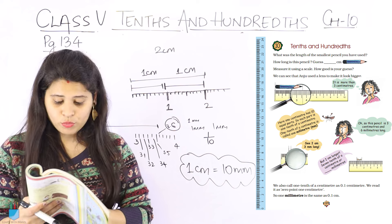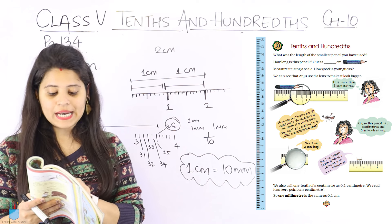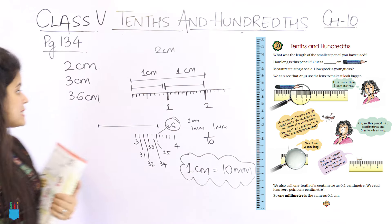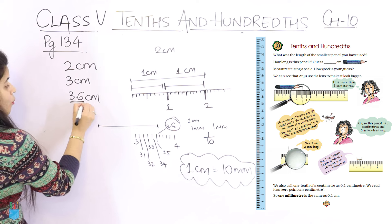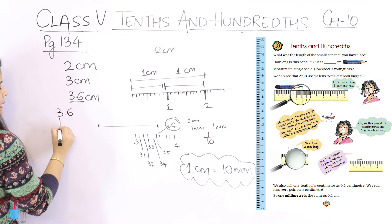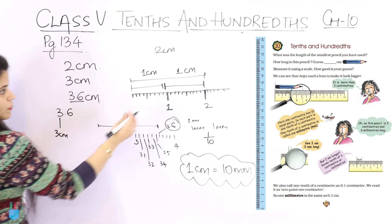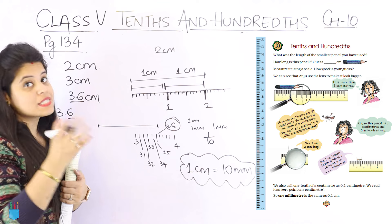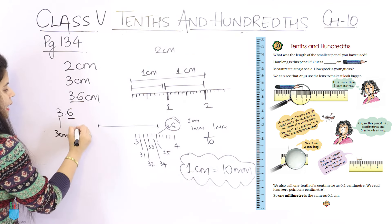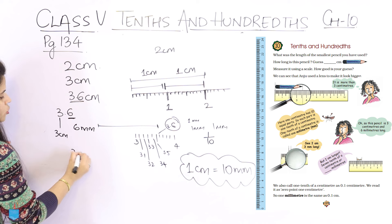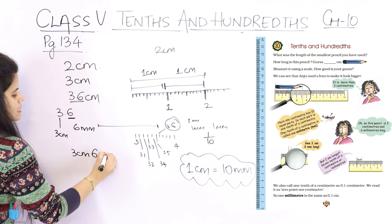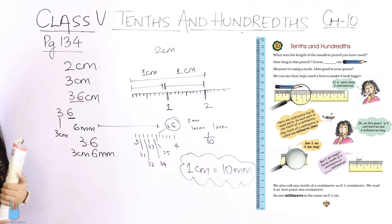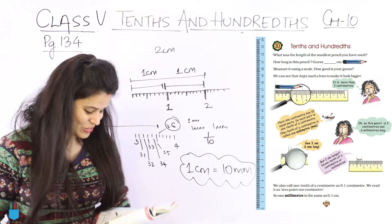This pencil is 3 centimeters and 6 millimeters long. So the pencil that we measured is 3.6. What does it mean? 3 centimeters which it has completed, and then 6 — it is between 3 and 4, not yet 4 centimeters. So what is the 6? It is 6 millimeters. So we can say it is 3 centimeters 6 millimeters. You can write 3.6 cm or 3 centimeters 6 millimeters.